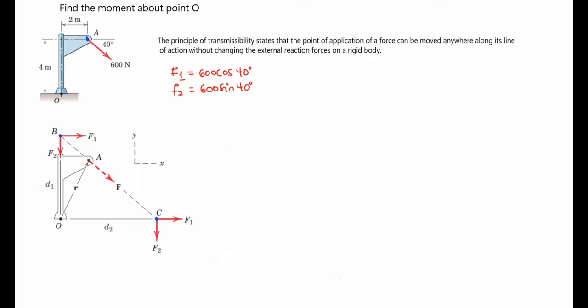Now when you look at point B — we are considering point B first — you see that F2 is acting directly on point O. That means it doesn't have any perpendicular distance from the line of action of the force, so that perpendicular distance will be zero. For that reason, the moment that F2 will cause about point O from point B will be zero. So our moment now would be the moment caused by F1, and that will be the moment about point O from point B: F1 multiplied by D1.